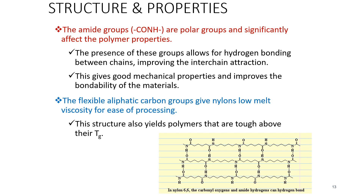For the structure and properties of nylon, there are two main important properties. First, nylon has the amide group C-O-N-H, which is considered a very polar group. Second, it has high flexibility. Because the amide group is very polar, it can hydrogen bond with each other, which gives good mechanical properties and improves the bondability of the material. In terms of flexibility, it gives nylon low melt viscosity for ease of processing, and this structure also yields polymers that are tough above their glass transition temperature (Tg). This is the structure of nylon 6-6 containing the carbonyl oxygen and amide hydrogen, which can hydrogen bond with each other.